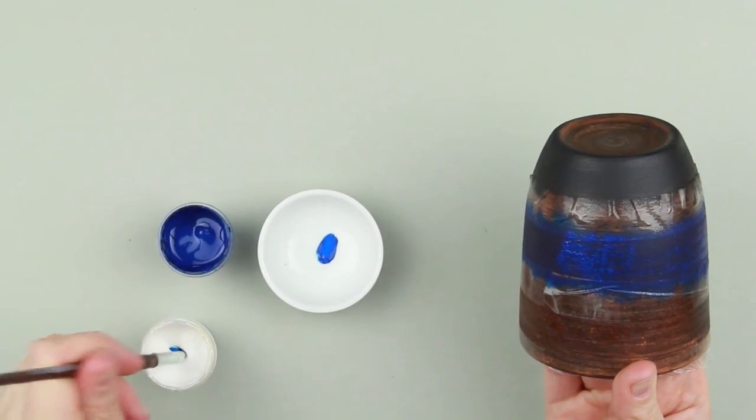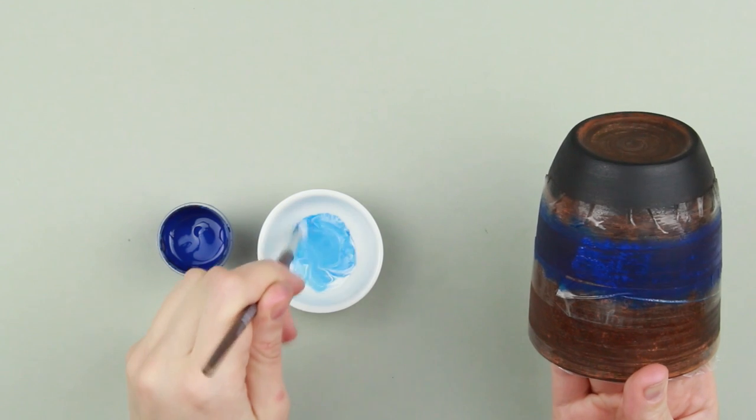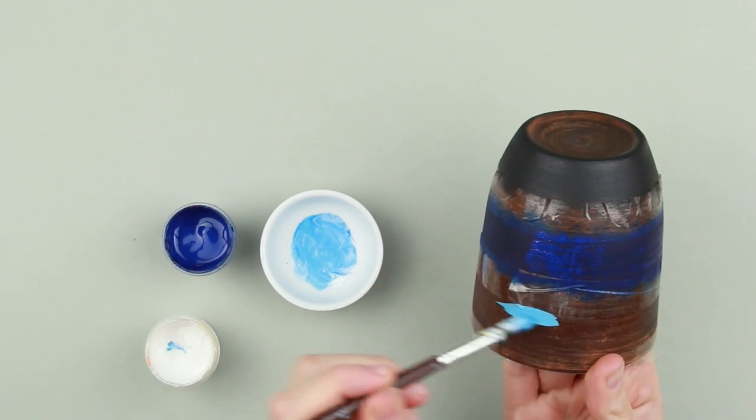Mix blue and white to get pale blue. Use the brush to paint the upper strip.